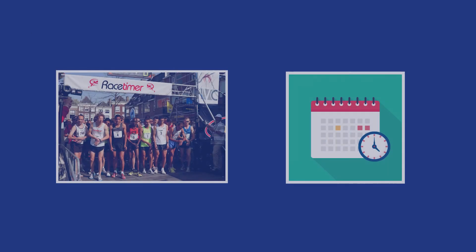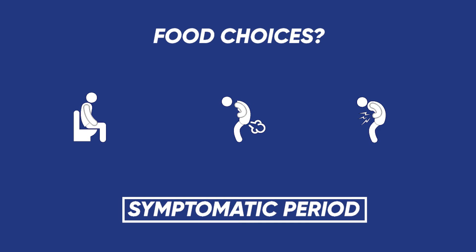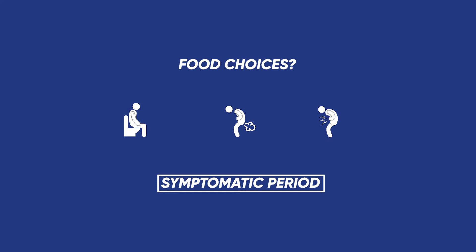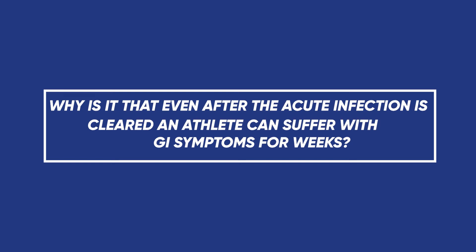An athlete's training block or events can be ruined by such illnesses. Prevention of these illnesses is critical, but if you're unfortunate enough to get poorly, you should know that what you eat during this period can have a significant impact on the length of time you are suffering from symptoms. You can shorten the duration of your symptoms by just avoiding a certain food group. Eating the wrong foods can lead to symptoms of diarrhoea, abdominal pain, and flatulence for weeks, even after your body's immune system has cleared the infection.